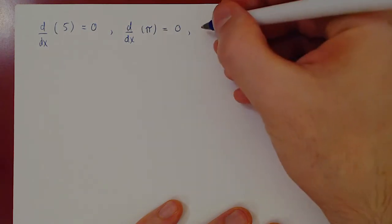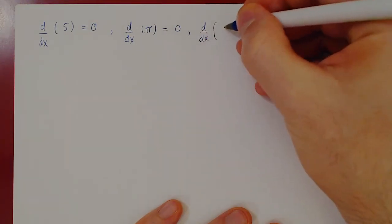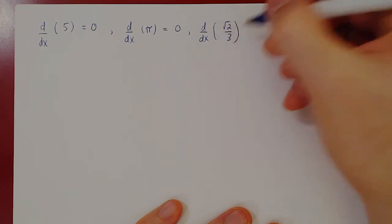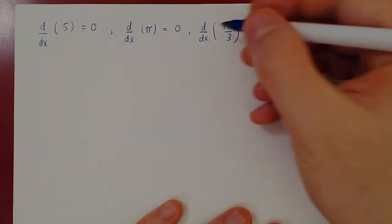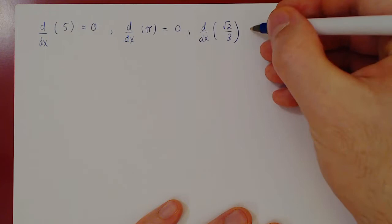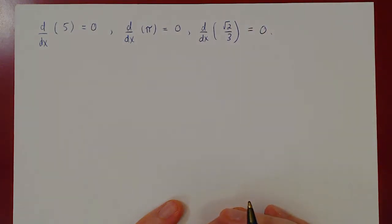What's the derivative of √2 over 3? Same thing — √2 over 3 is a constant function, it is a horizontal line, it has a slope of zero, hence the derivative is zero. That's the constant rule: the derivative of a constant is always zero.